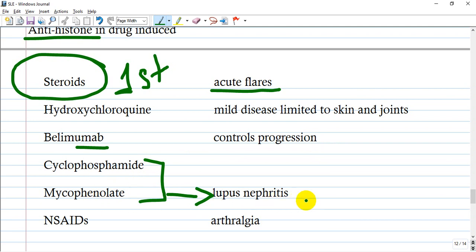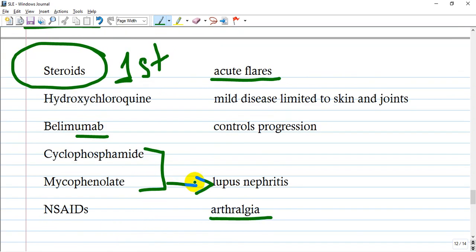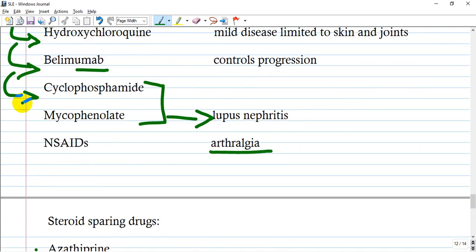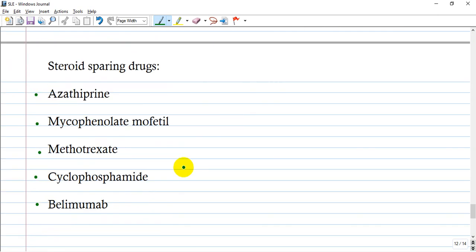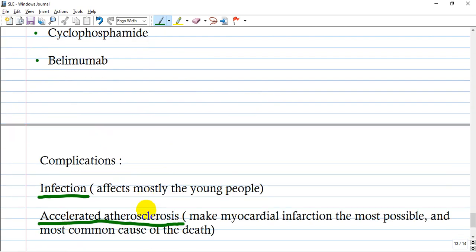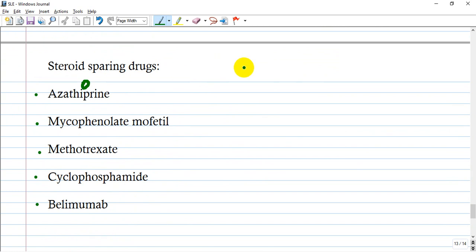for lupus nephritis. We know all the adverse side effects of these drugs, but we have to use them to control or decrease progression or stop progression, or even to ameliorate symptoms. NSAIDs for arthritis are mostly for pain. We cannot use steroids for a long time, so we are obligated to change to steroid-sparing drugs like azathioprine, mycophenolate mofetil, methotrexate, cyclophosphamide, and belimumab. When we see side effects of steroids, we go for steroid-sparing drugs.